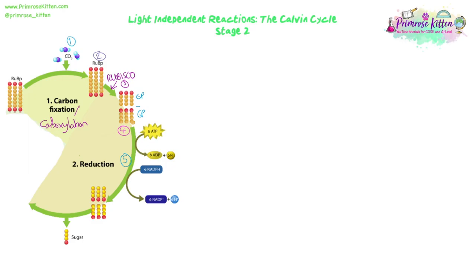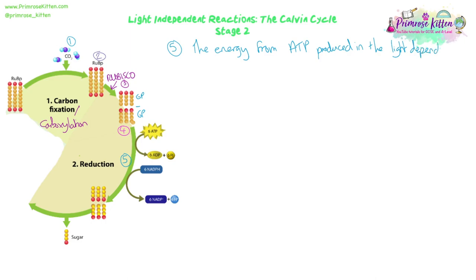We've combined carbon dioxide with our RuBP, catalyzed by Rubisco, and that's broken down into two molecules of GP. Now we have to use some of the products from our light dependent reactions. We're using some of the ATP, and the H+ from the reduced NADP is going to be used to reduce the GP. That's why this stage is called reduction - because we're reducing GP. Remember OIL RIG: oxidation is loss of electrons or hydrogen, and reduction is gain of electrons or hydrogen. So GP is being reduced because it's gaining H+ and electrons from reduced NADP.